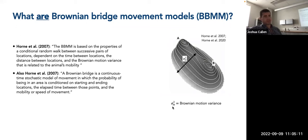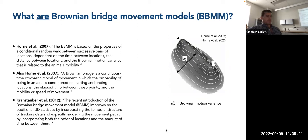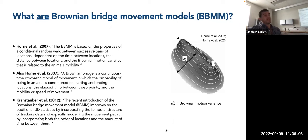The variable sigma squared m is our Brownian motion variance. A paper by Kranstauber and colleagues in 2012 states that the recent introduction of Brownian Bridge Movement Models improves on traditional UD statistics by incorporating the temporal structure of tracking data and explicitly modeling the movement path — incorporating both the order of locations and the amount of time between them. This shows improvements over traditional metrics such as kernel density estimation, which may not account for temporal structure or movement speed between successive observations, since it assumes locations are independent and identically distributed.